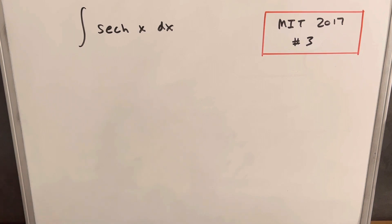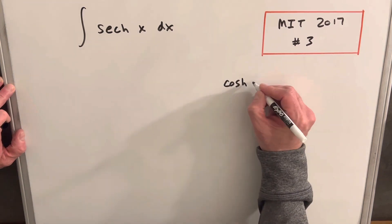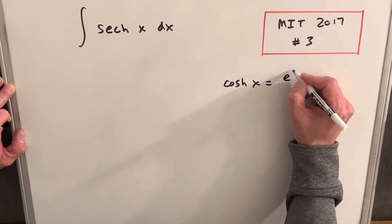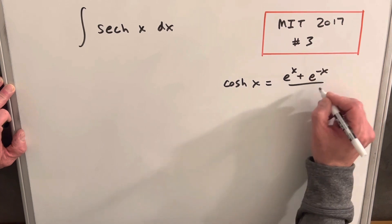To start with, what I want to do is just remember our definition for hyperbolic cosine, which is e to the x plus e to the minus x over 2.